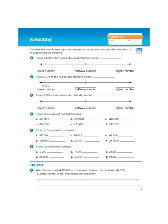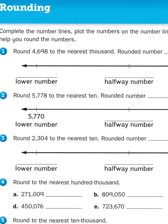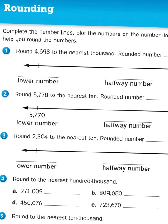So let's first take a look at problem number one. It says complete the number lines, plot the numbers on the number lines, and then use them to help you round the numbers. Let's zoom in a little bit. It says round 4,698 to the nearest thousand. Now that place value is going to be important to remember — thousand.